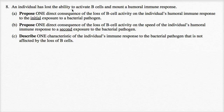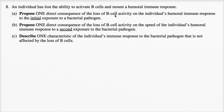An individual has lost the ability to activate B cells and mount a humoral immune response. Part A: propose one direct consequence of the loss of B cell activity on the individual's humoral immune response to the initial exposure to a bacterial pathogen.